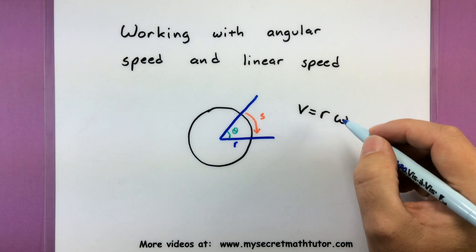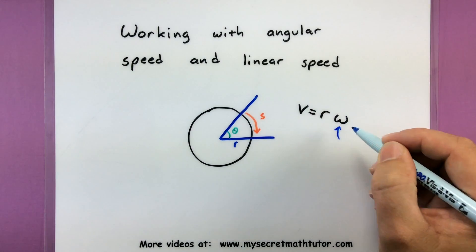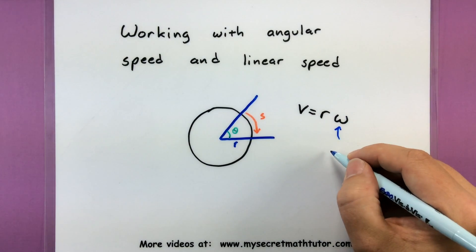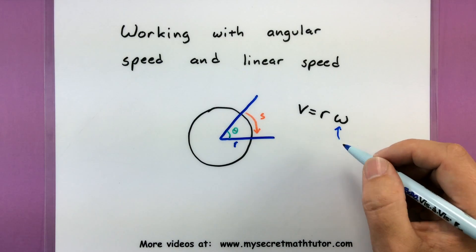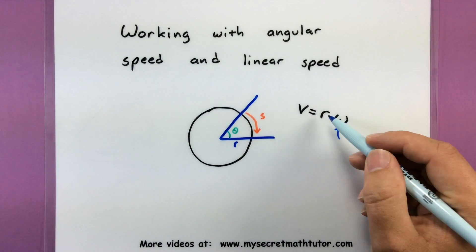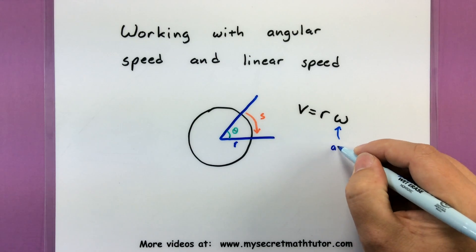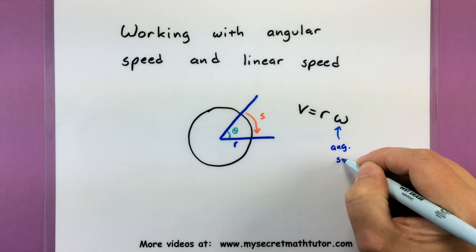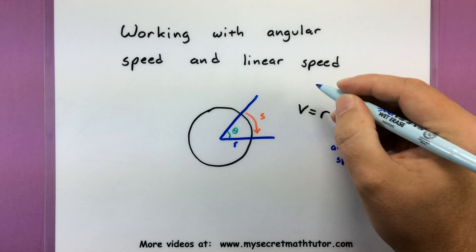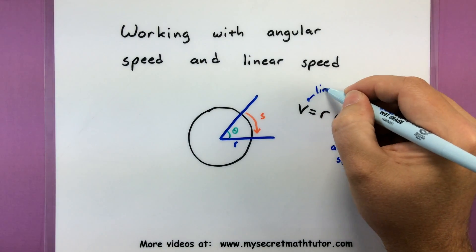Well the connection is this. If you know the angular speed, that'd be this omega over here, then you can find out its linear speed by taking the angular speed and multiplying by the radius. So let's go ahead and mark this off. So this is angular speed and we will call this one linear speed.